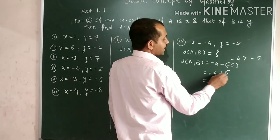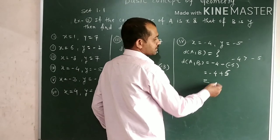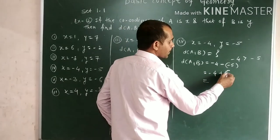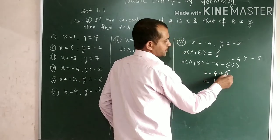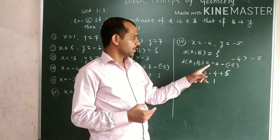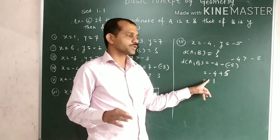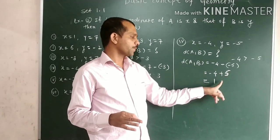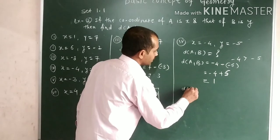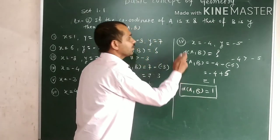Minus plus minus gives plus. So the distance is 1. Therefore, the distance between points A and B equals 1. This is example number 4.